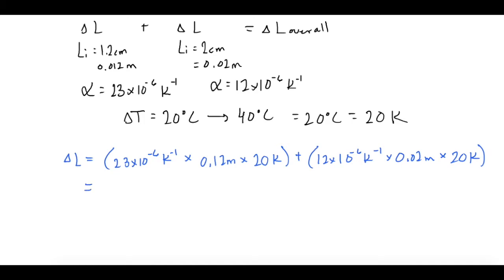So if you multiply all that out, the delta L overall is going to be 1.032 times 10 to the negative 5 meters, but they want it in centimeters. So if you multiply that by 100, we get 1.032 times 10 to the negative 3 centimeters.